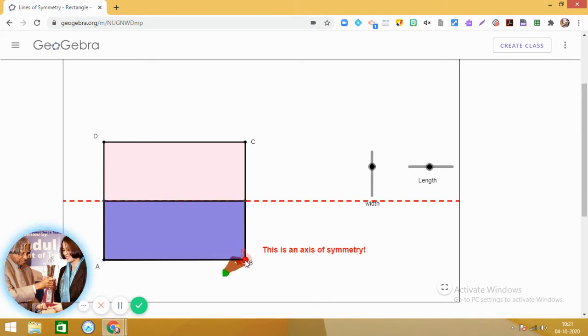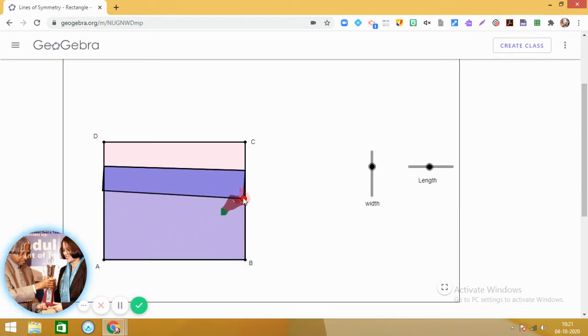So in a rectangle we have seen that two lines of symmetry are there. So let us now explore the third way if possible. Try to fold it along the diagonal. Let us see if we are able to get a line of symmetry.